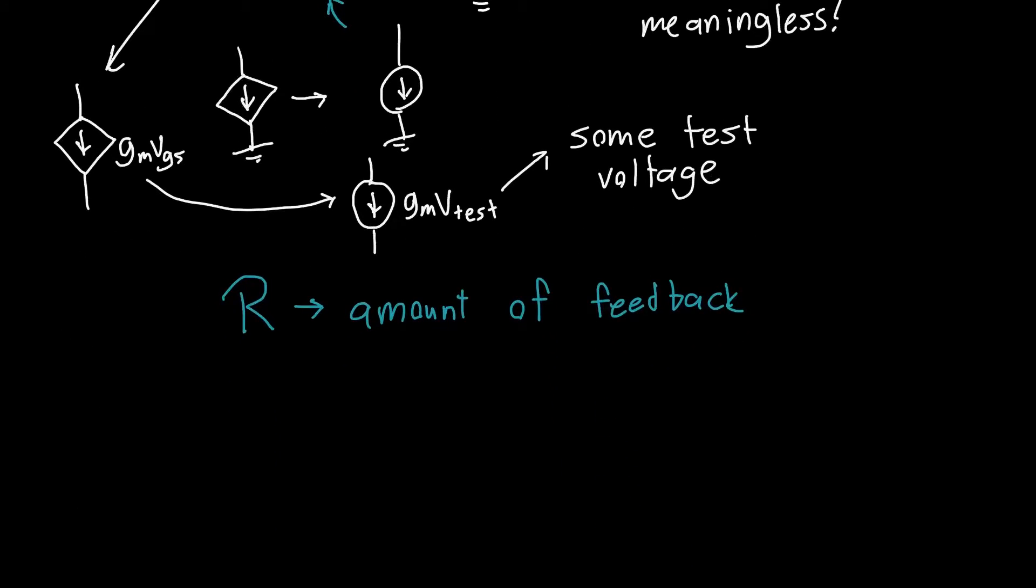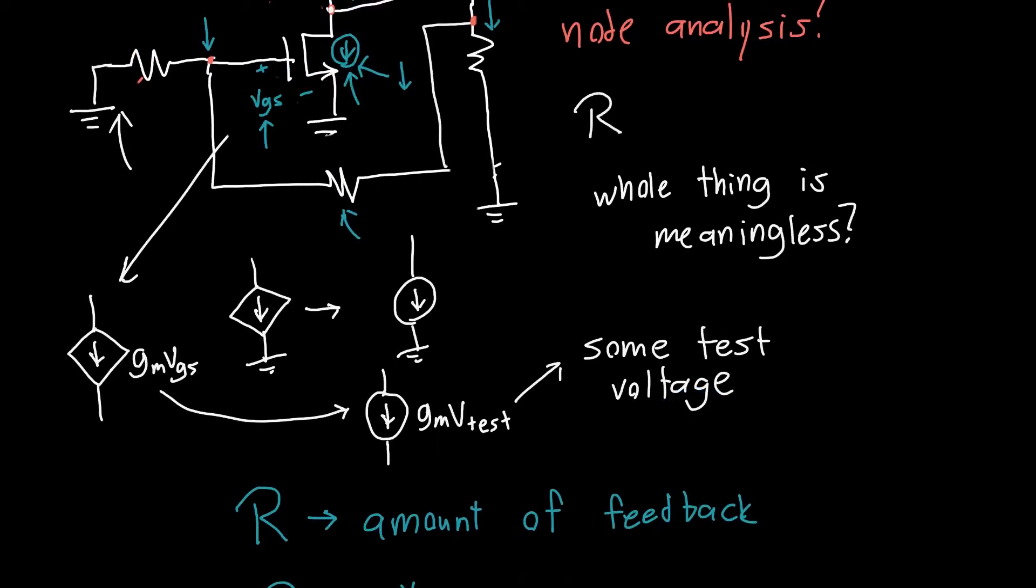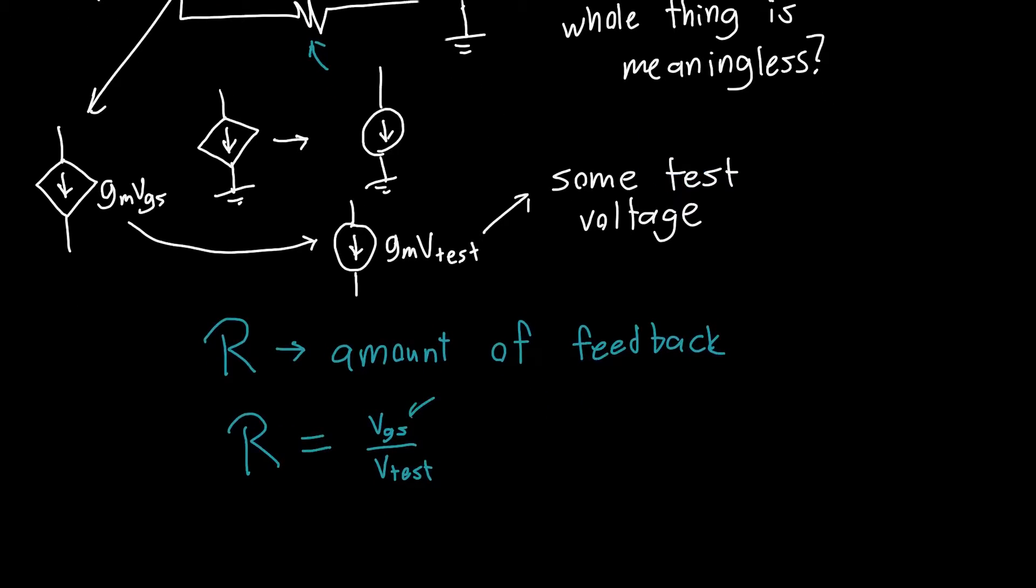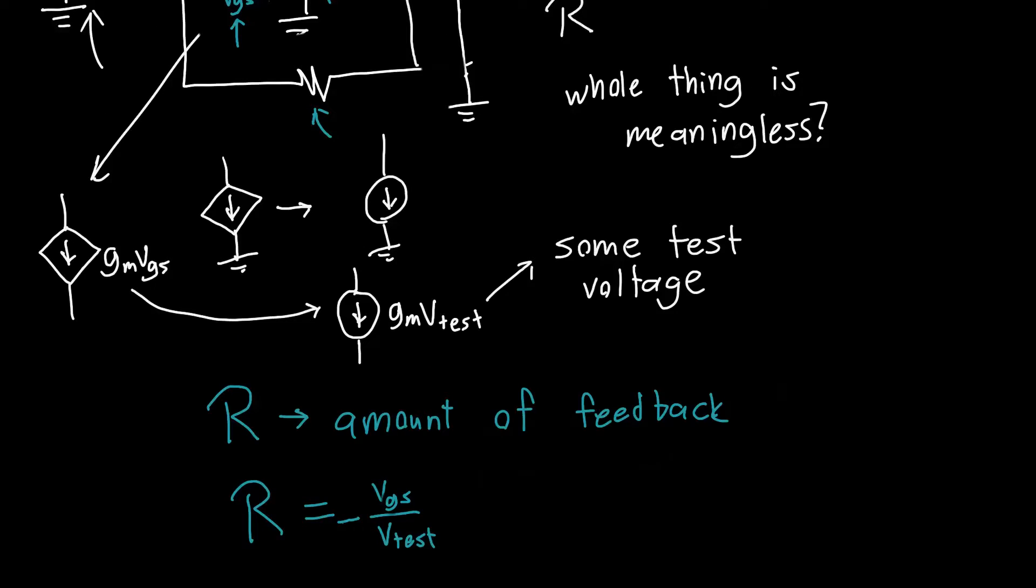the amount of feedback R as the ratio between the returned voltage Vgs divided by the test voltage. And you'll see, since this feedback is negative, that Vgs would actually be a negative quantity, and that would make the return ratio negative. But I like dealing with positive numbers, everyone likes dealing with positive numbers, so we're just going to slap a minus sign out front somewhat arbitrarily to define the return ratio as positive. Now, because the Vgs voltage is the value that we got returned from the feedback loop, we just call it minus Vr over Vtest.